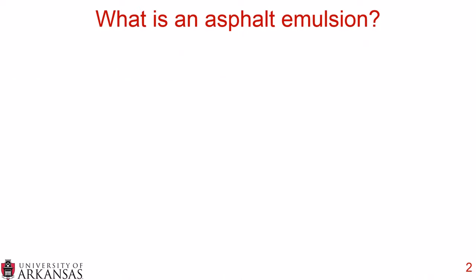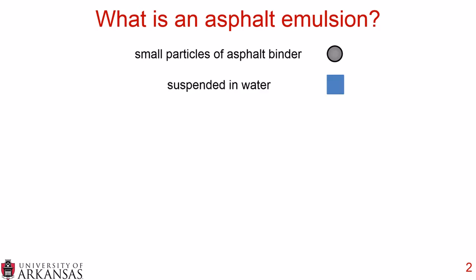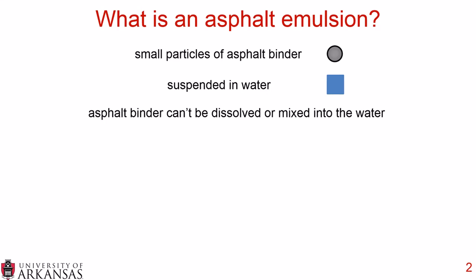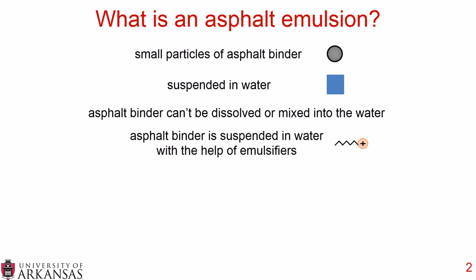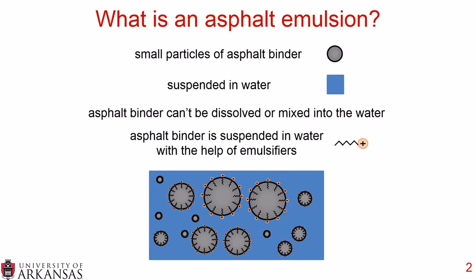To begin with, we will define what is an asphalt emulsion. An asphalt emulsion is small particles of asphalt binder that are suspended in water. The asphalt binder can't be dissolved or mixed into the water, and it is suspended in water with the help of emulsifiers. This is the definition and characteristics of an asphalt emulsion.